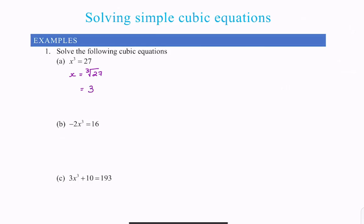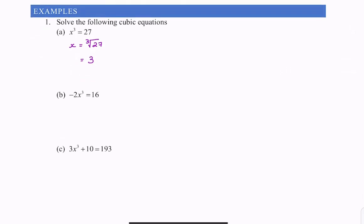And this follows through with every other question. So if I have a look at this one, I want part B to say x cubed equals something. So the first thing I'm going to do is divide both sides by negative 2.